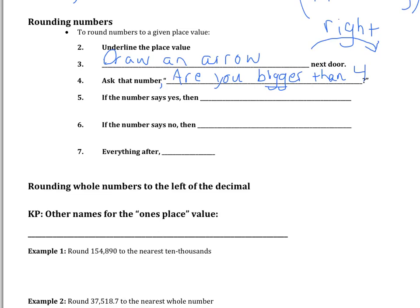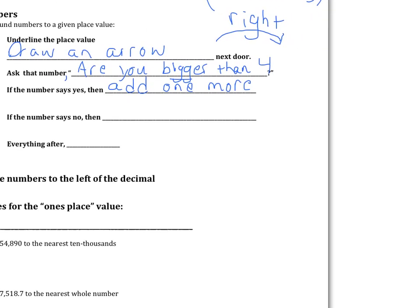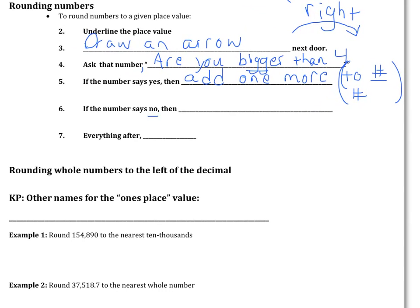If the number says yes, then add one more — and I want to add, add one more to the underlined number. If the number says no, then it don't grow. When you write a Pritzker, no contractions — 'don't,' D-O-N, no contractions. Next, everything after becomes zero. The key is everything after becomes zero.